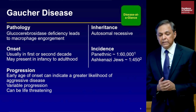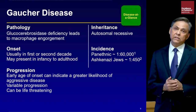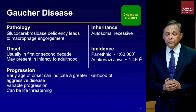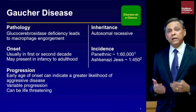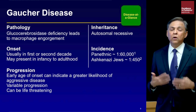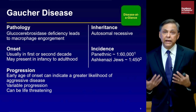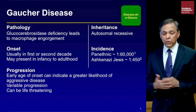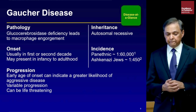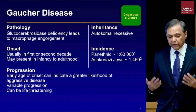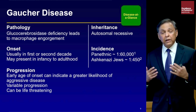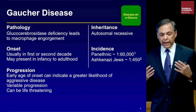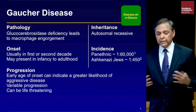Gaucher disease is a deficiency of the enzyme glucocerebrosidase, also called acid beta-glucosidase. When this enzyme is deficient, it leads to florid accumulation of the lipid glucosylceramide in the lysosomes of macrophages. It can occur at any age from infancy up to the eighth or ninth decade. The progression is highly variable, and early age of onset indicates a greater likelihood of aggressive disease. It can also be life-threatening at any age.